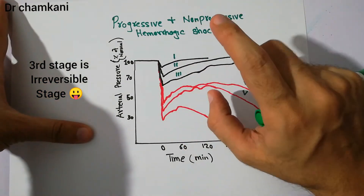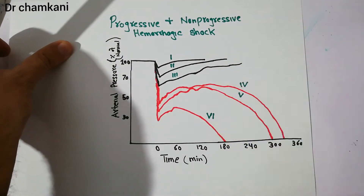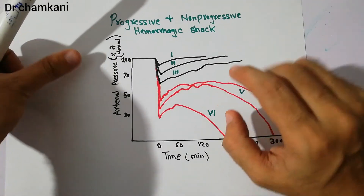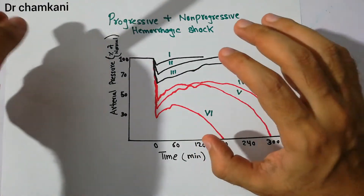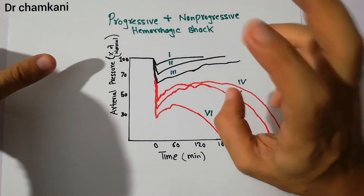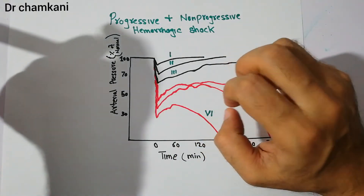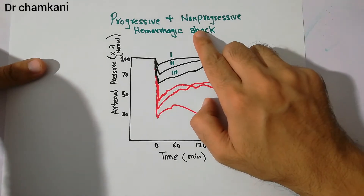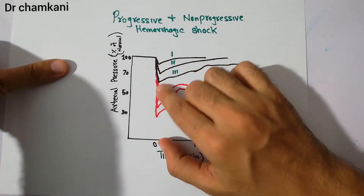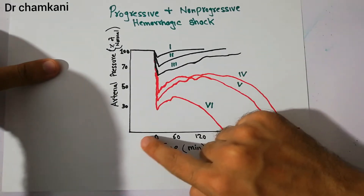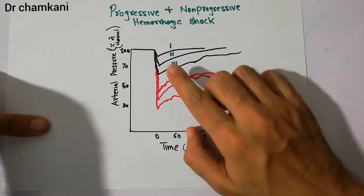In this experiment we take some animals and bleed them, with the amount of blood removed being different for each group — we consider six groups of animals. We plot the data on a graph where the y-axis shows arterial pressure, which is a good predictor of tissue perfusion. With decreasing arterial pressure, perfusion decreases and the state of shock develops. On the x-axis we have time, showing how long each group of experimental animals takes to either recover or die.